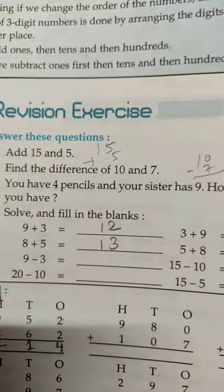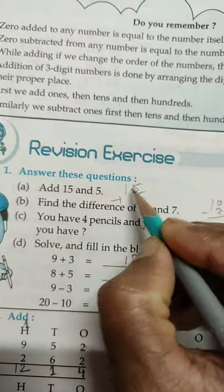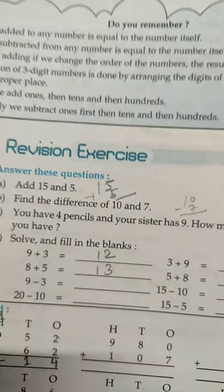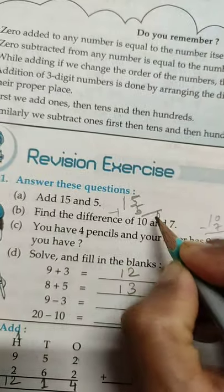So 15 and 5, you need to add 15 and 5. So what will be the answer? 5, 5, 10. 1 carry 2. 20 is the answer.